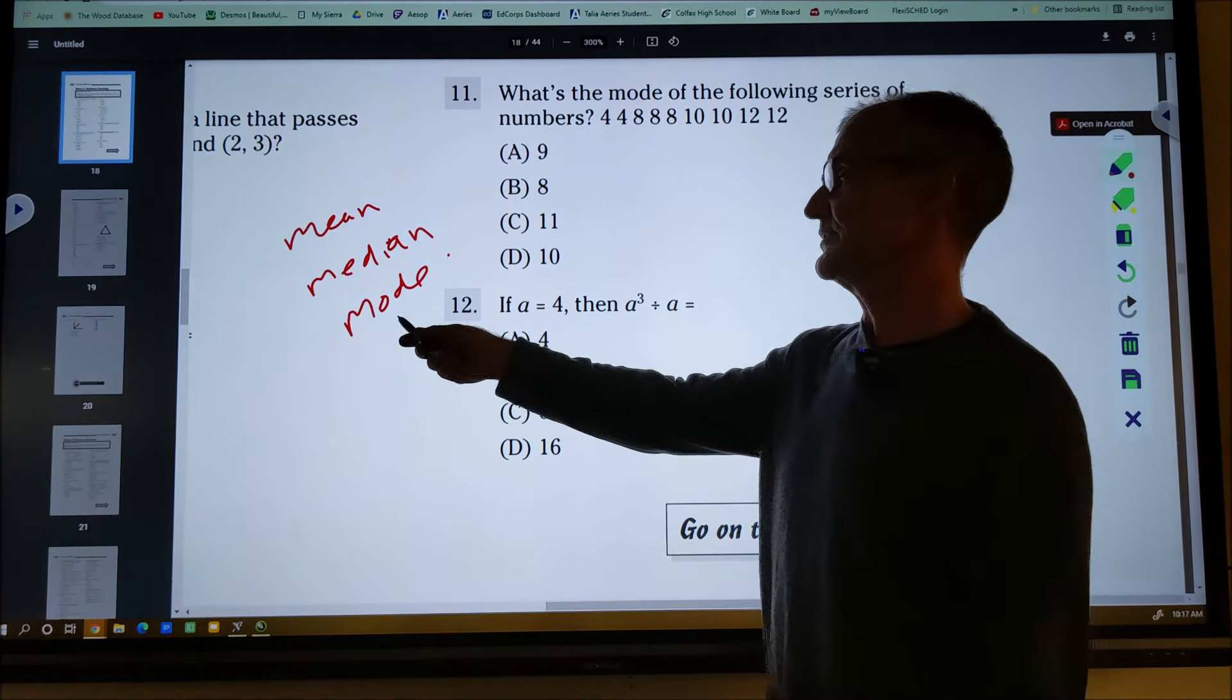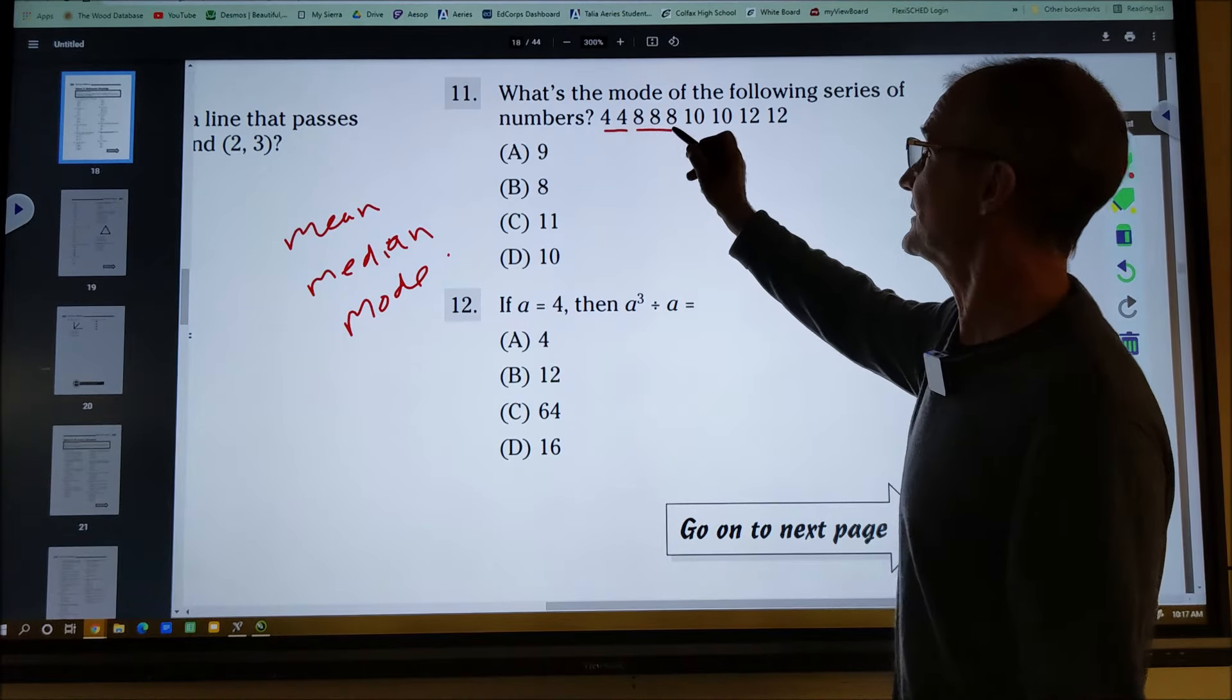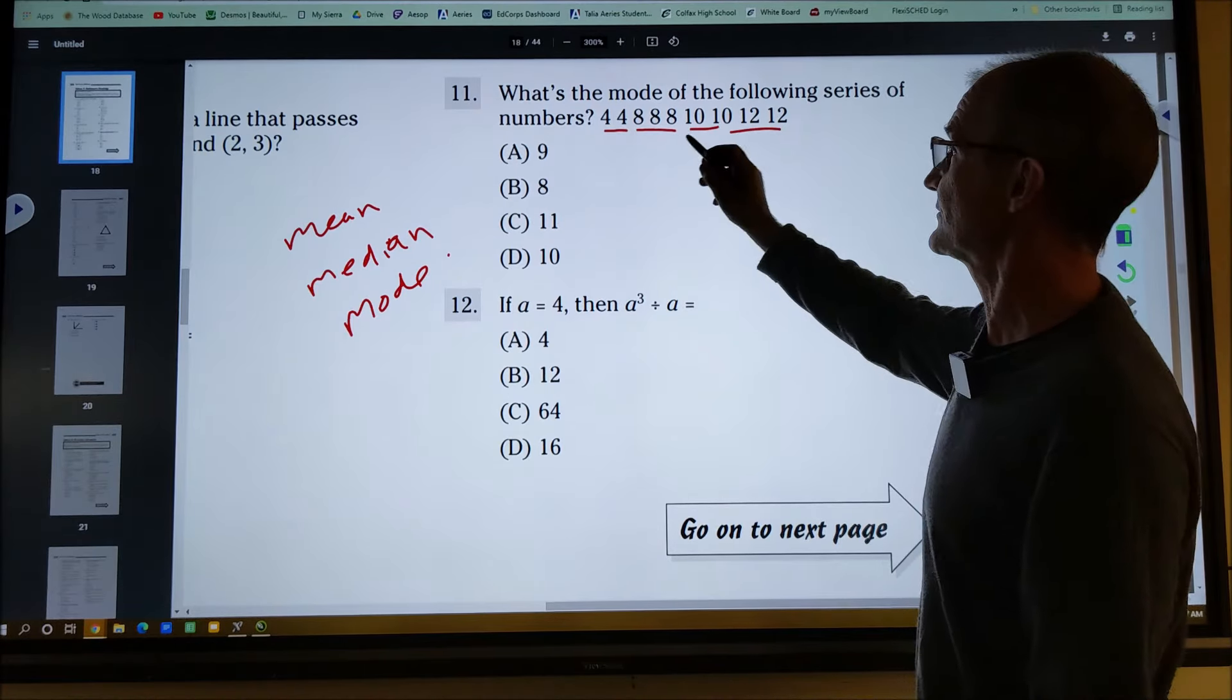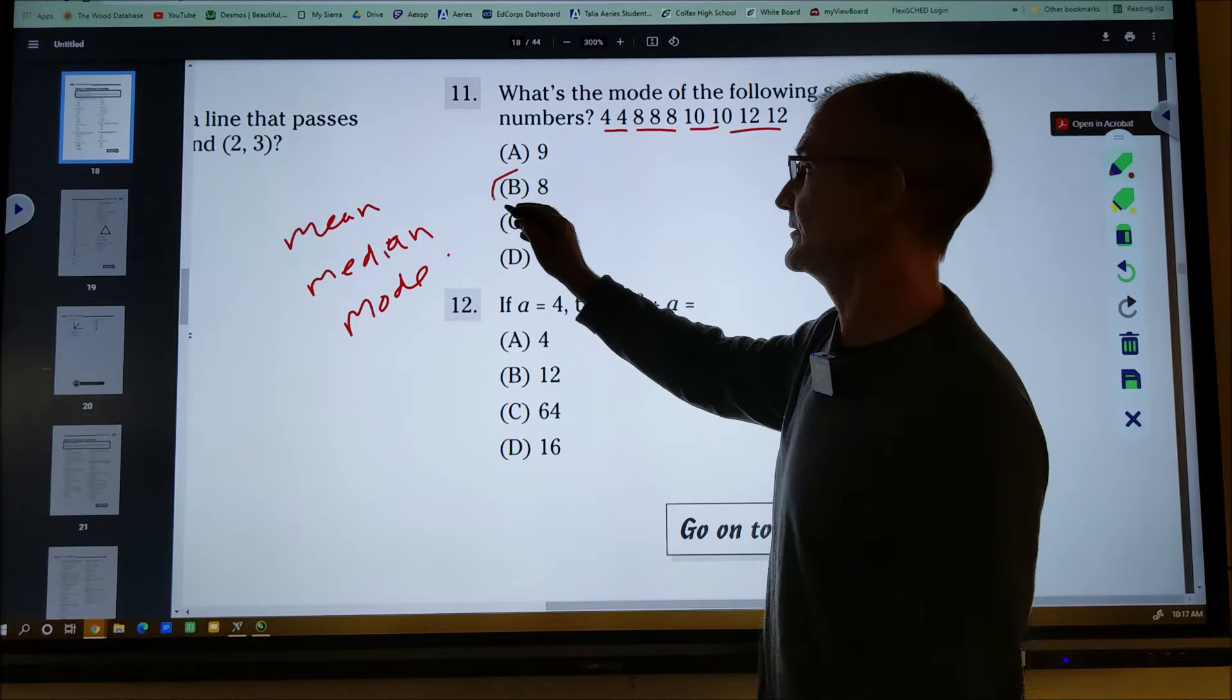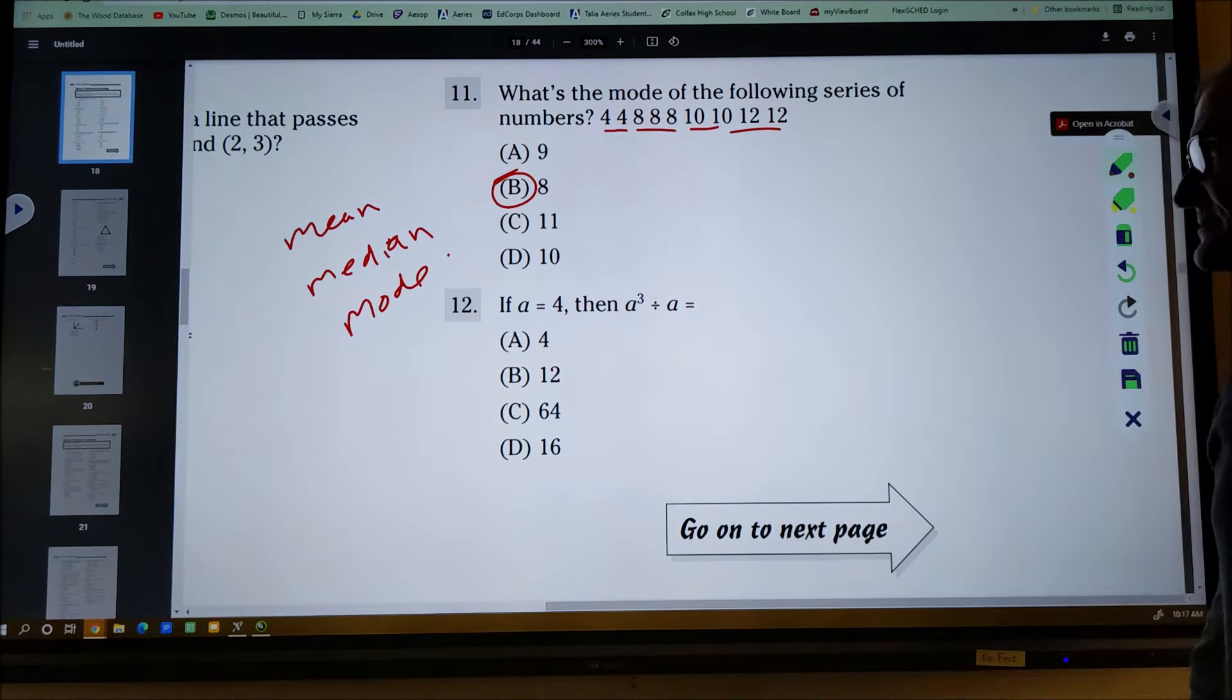So which one appears most frequently? I'm going to look here. There are two fours, three eights, two tens, two twelves. So eight is the mode. There are more values of eight than any other value. Again, a vocab question.